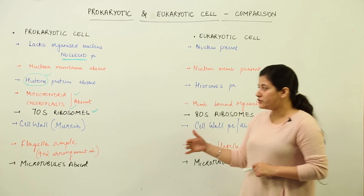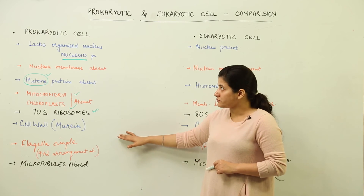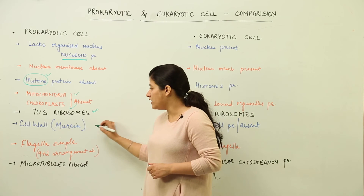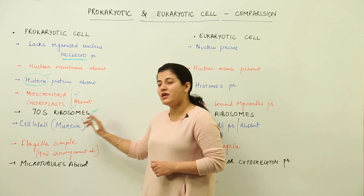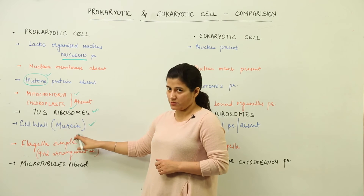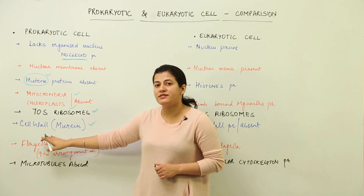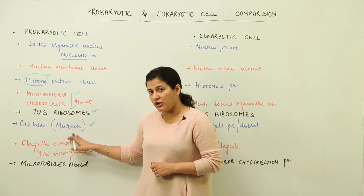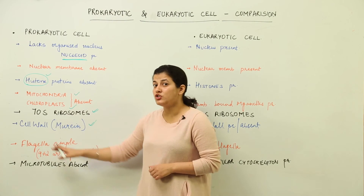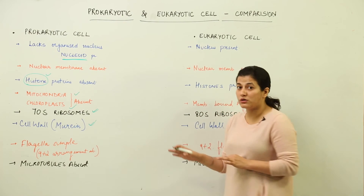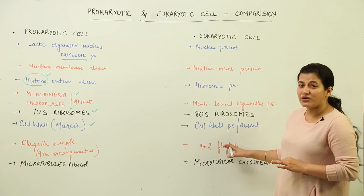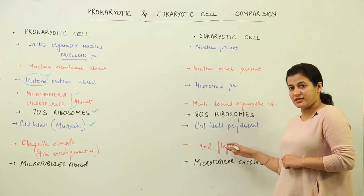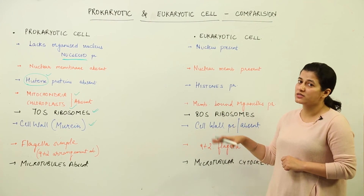Now let's move to the cell wall. Prokaryotic cells are simple cells with a simple nucleus, but they have a very complex cell wall. The cell wall is made up of murine — a complex protein. They also have a cell envelope which no other organism possesses. In case of eukaryotic cells, they can have a simple cell wall as in plants, or no cell wall at all as in animals.